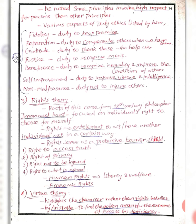Next is Rights Theory. In the 18th century, philosopher Immanuel Kant has the roots of this theory. He focused on individual rights.